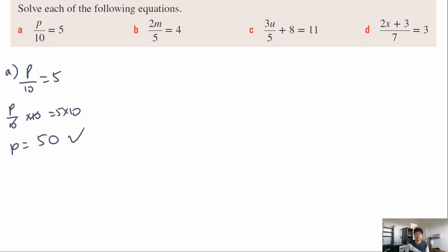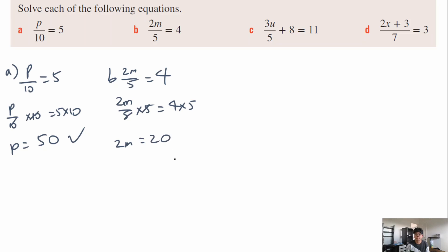Question b: 2m over 5 equals 4. Multiply both sides by 5 first to get rid of the fraction, giving 2m equals 20. Now divide both sides by 2, giving m equals 10. Give yourself a tick if you got that one correct.